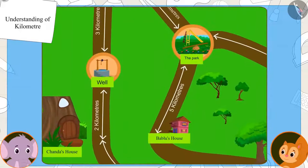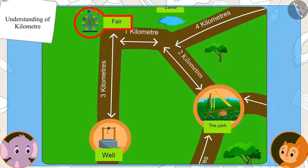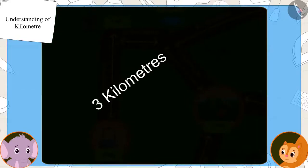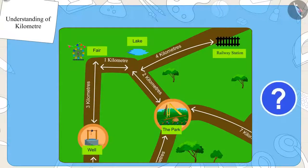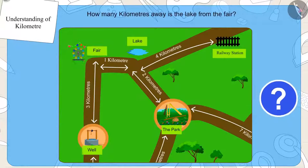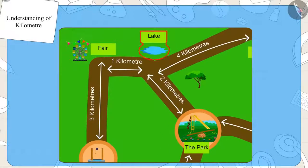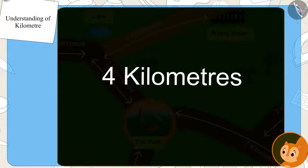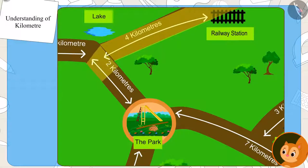Look at this, Chanda. We will start from the well and first we will go to the fair. As I told you on the phone yesterday, you can see the distance from here to the fair on the map. The distance is written on the map as three kilometers. Kids, can you see this map and tell how many kilometers away from the fair is the lake? The distance from the fair to the lake is one kilometer. Chanda saw on the map that the distance from the lake to the railway station is four kilometers, and from the lake to the park is two kilometers.